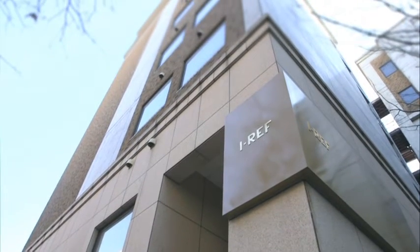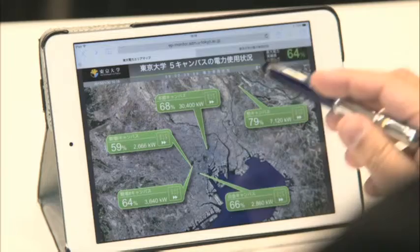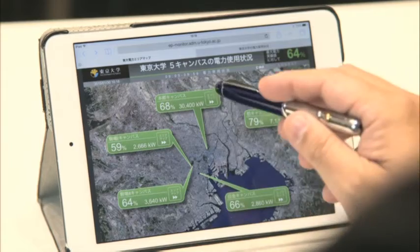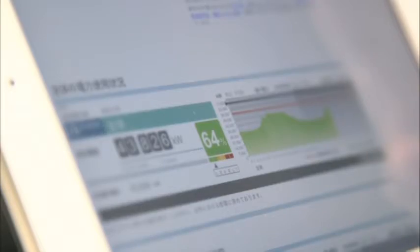Professor Esaki aims to construct smart cities using the internet. His system allows the electrical power consumption of the University of Tokyo to be checked and controlled from anywhere on the globe.